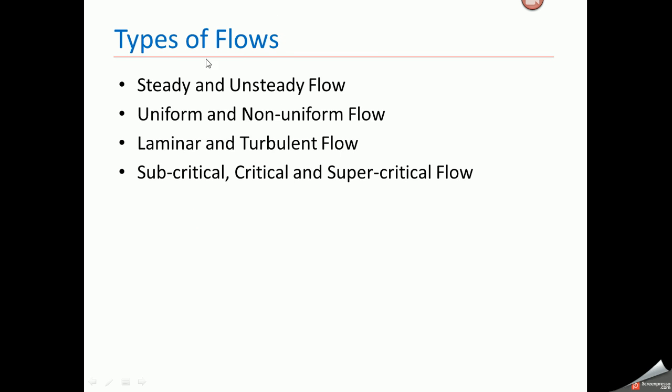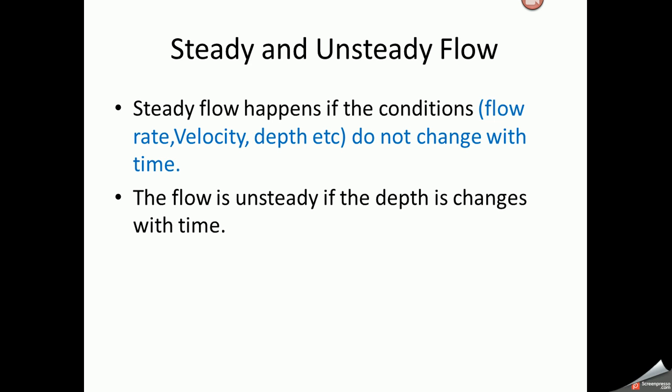The types of flows are: steady and unsteady flow, uniform and non-uniform flow, laminar and turbulent flow, and subcritical, critical, and supercritical. Steady flow occurs if the conditions — flow rate, velocity, depth, etc. — do not change with time. That flow is called steady flow. Unsteady flow is when the depth changes with time; that flow is called unsteady flow.